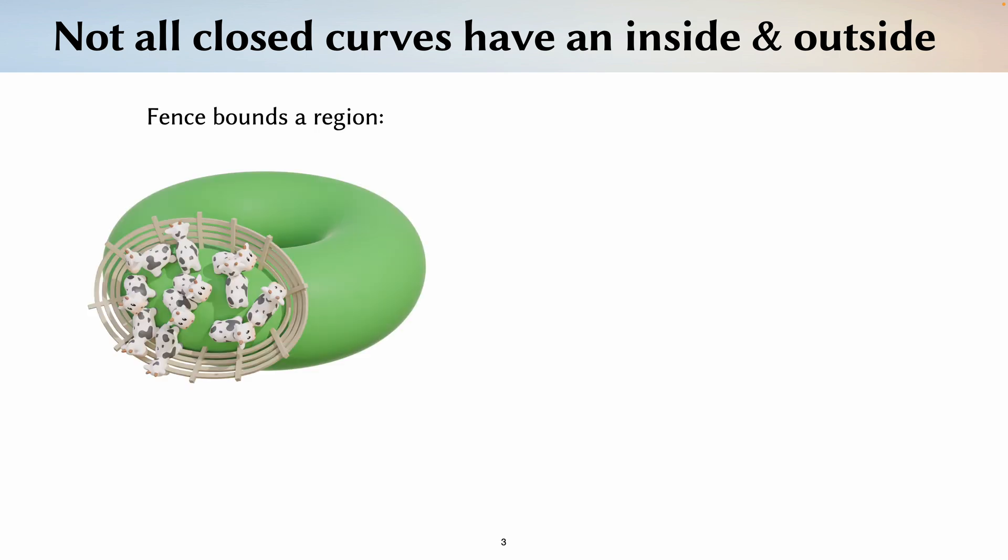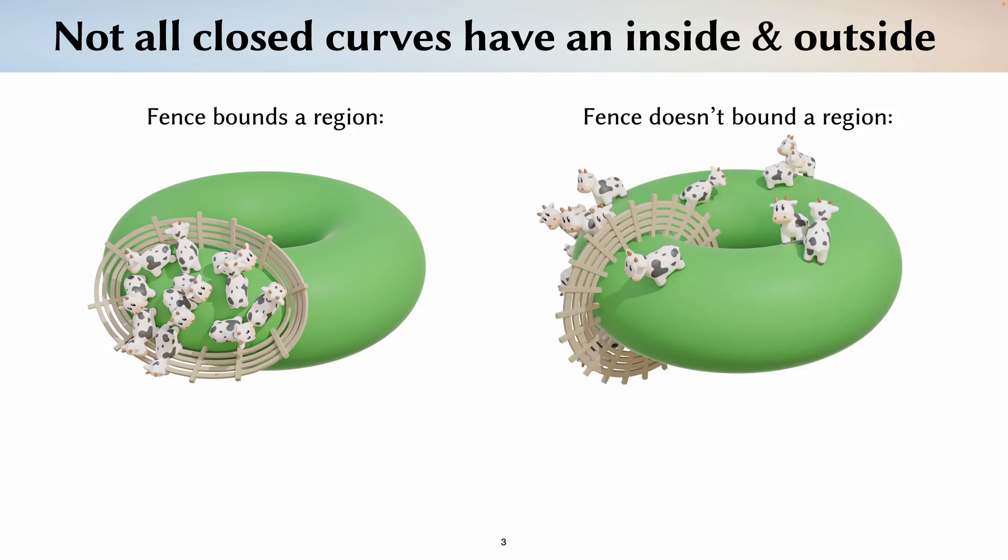For example, this fence forms a closed curve and the cows are confined to one region on this torus. But this fence also forms a closed curve with no gaps, and yet the cows are free to roam wherever they like. We call curves like the one on the left bounding because they bound a region, and curves like the one on the right non-bounding because they don't bound regions.